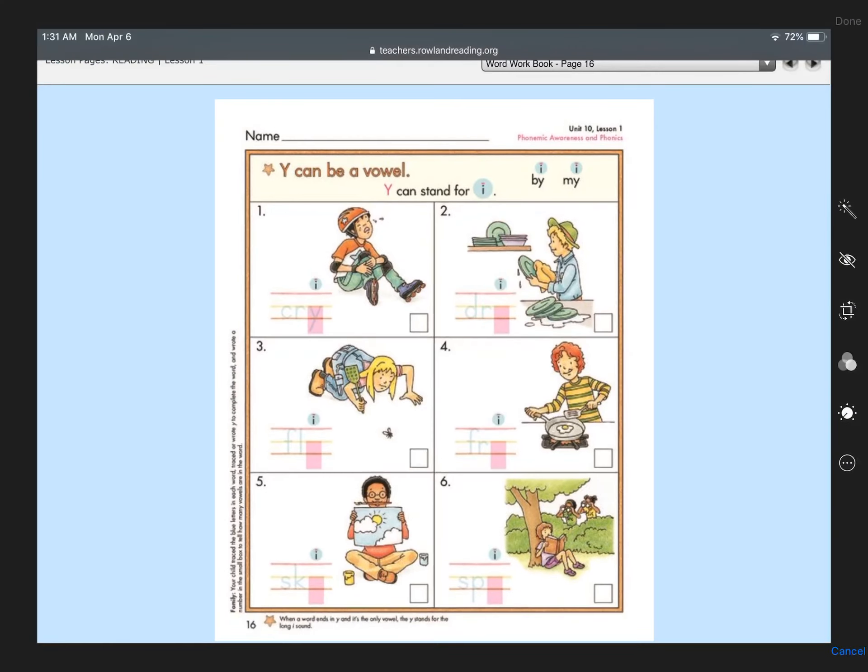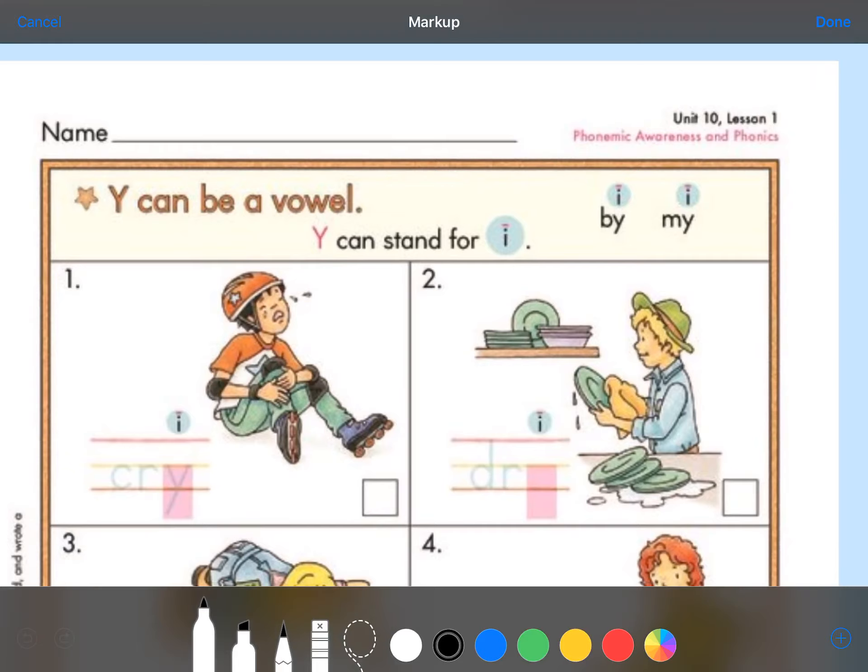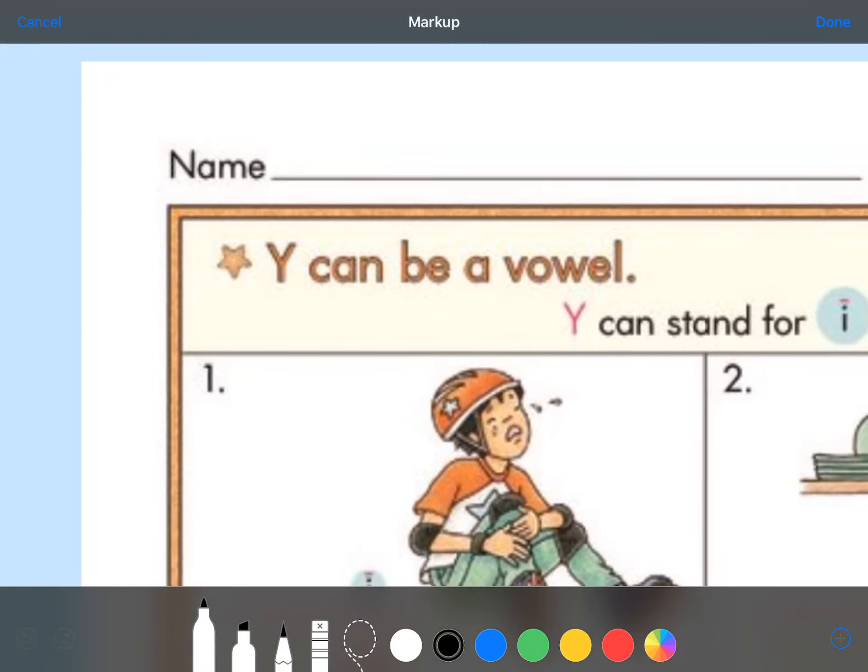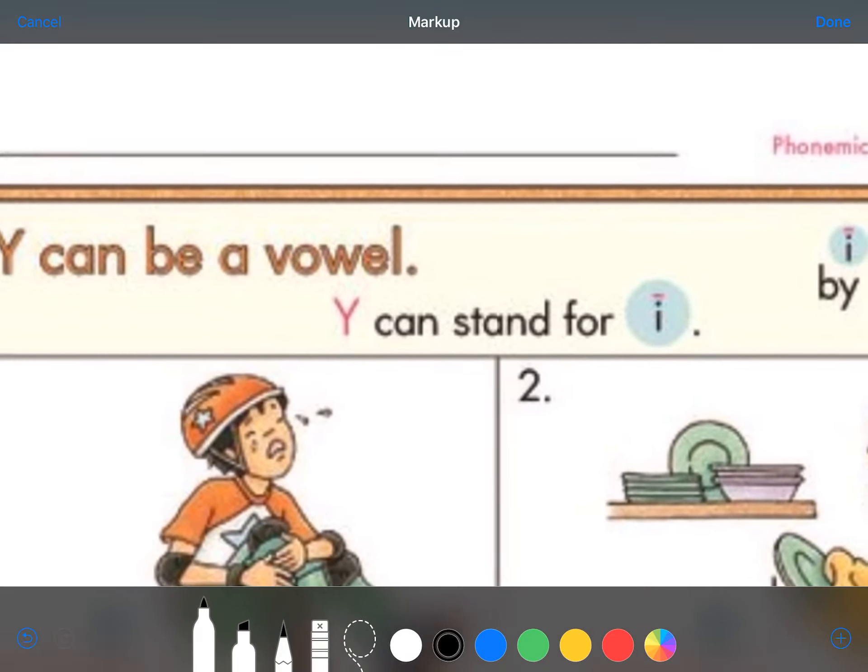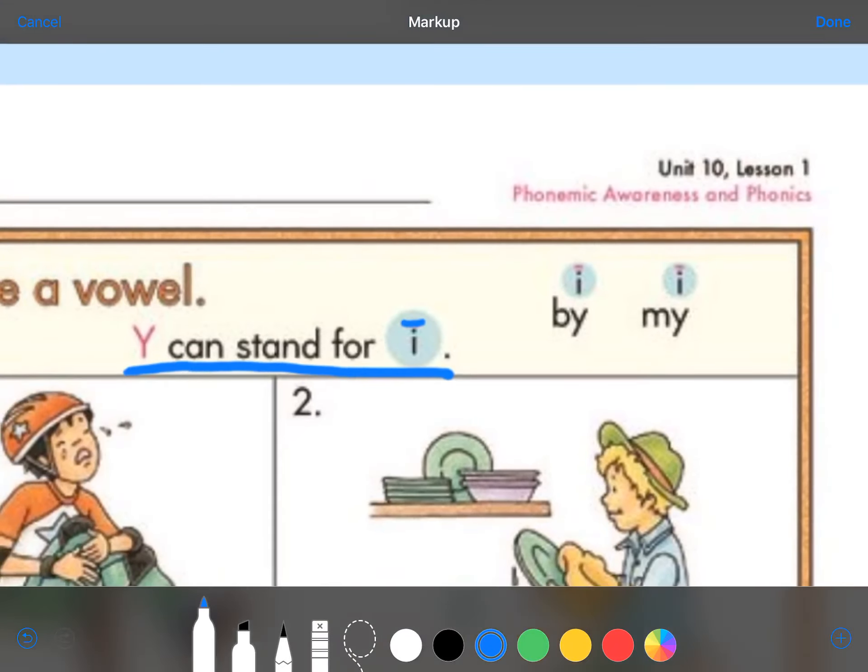You should be in your Super Kids Word Workbook on page 16. We're going to talk about the letter Y this week. The letter Y, we know that the letter Y is a consonant and it can stand for the Y sound as in yes or yellow. But now we get to learn that Y can be a vowel. So it can also be a vowel in certain words. Look at this sentence right here. Y can stand for I. Anytime we see the letter Y with a line right over the top, that means it's a long vowel sound.